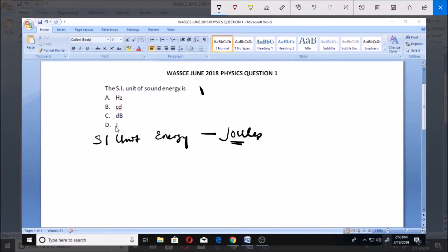then sound energy is a form of energy, so the SI unit for sound energy is joules, and that makes it the answer. Now for more clarity, we are going to look at the SI unit for the other quantities.